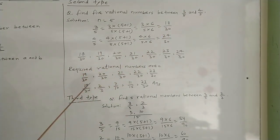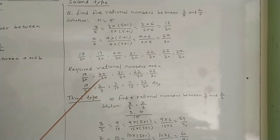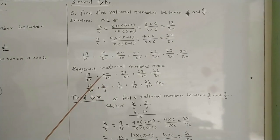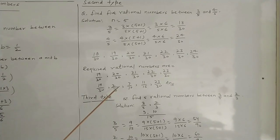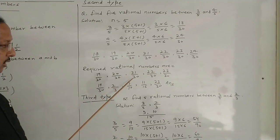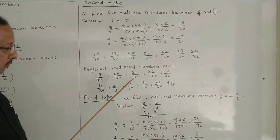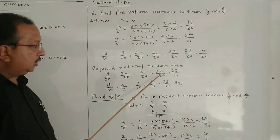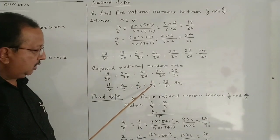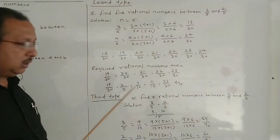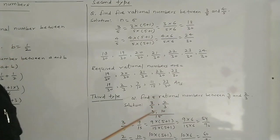We can simplify them if possible. So 20/30 simplifies to 2/3, 21/30 simplifies to 7/10, 22/30 simplifies to 11/15, and 23/30 remains 23/30.